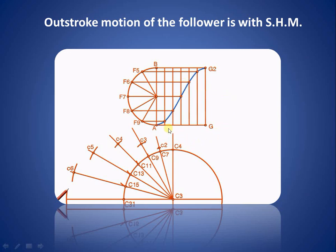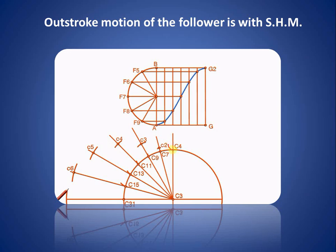Now transfer these distances. The first important thing to note is that we have considered a knife edge follower. The knife edge follower is positioned at the top, with guides shown on the sides, and the follower motion takes place along this particular path. We can then transfer these particular distances from the displacement diagram.